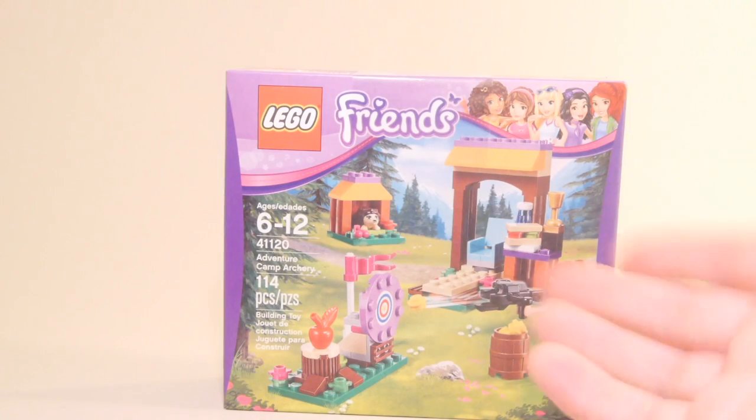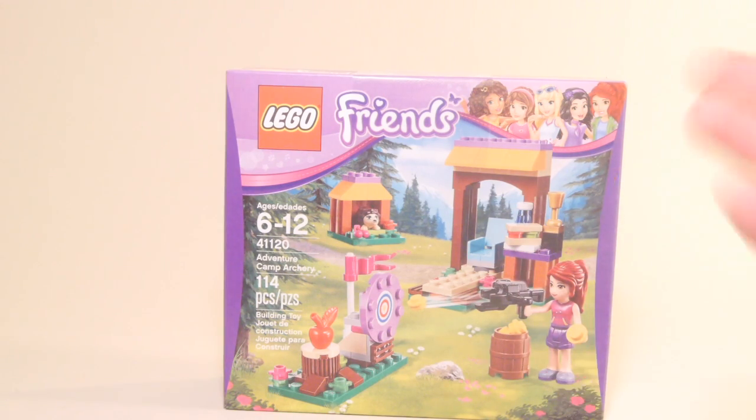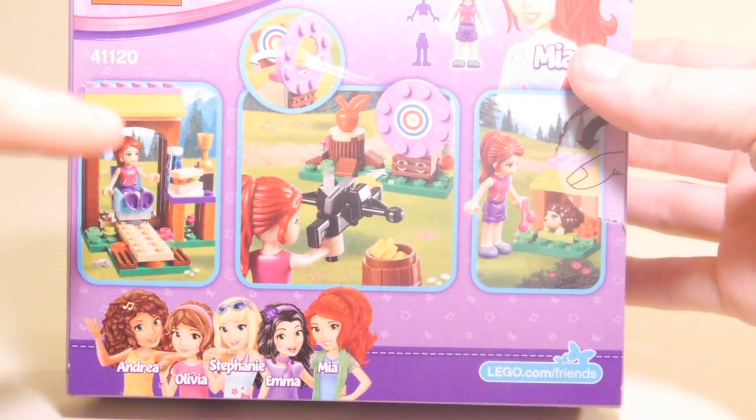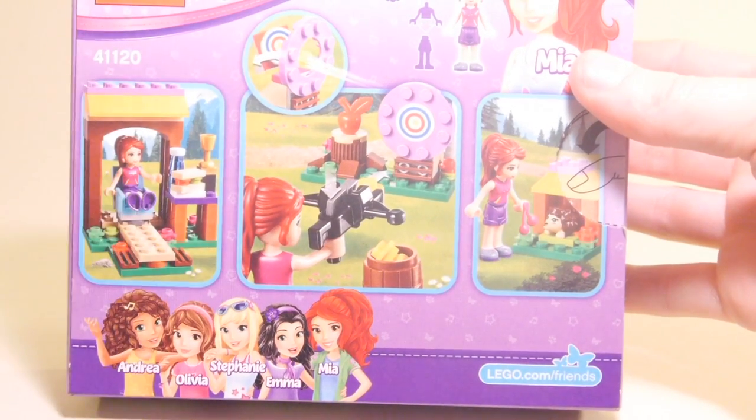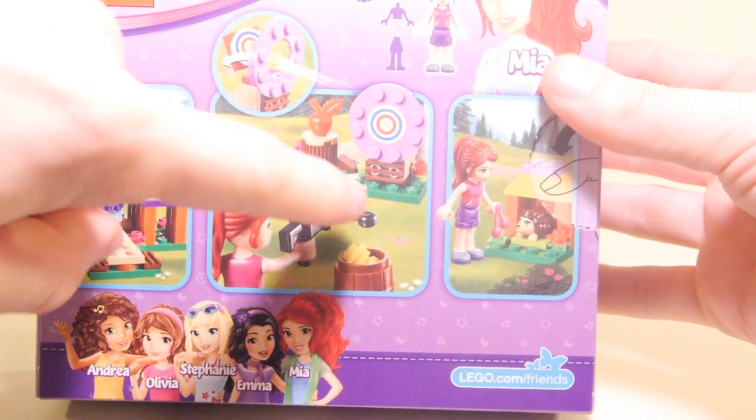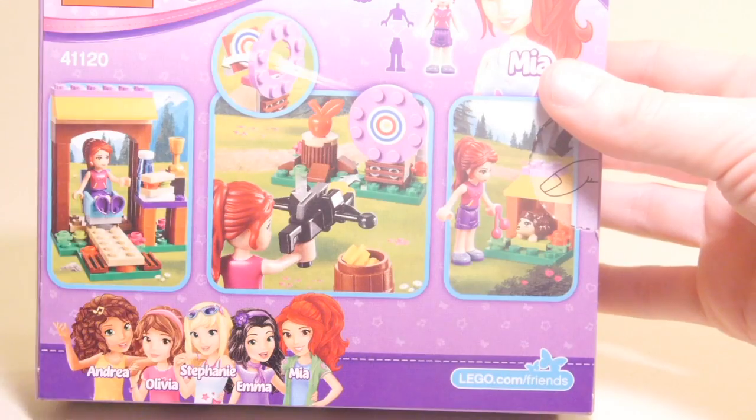So this set features Mia, and she's a crossbow expert, or working on it anyway. In the set you have a little seating area with trophies and sandwiches, you have the archery practice area, and then you also have a little house for the hedgehog.